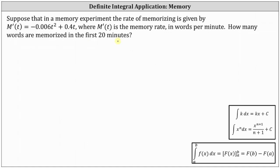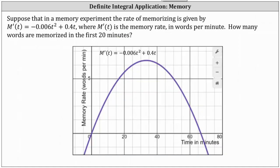Let's first take a look at the graph of M'(t). Notice M'(t) is a parabola that opens down. Along the horizontal axis we have time in minutes. Along the vertical axis we have the memory rate in words per minute.